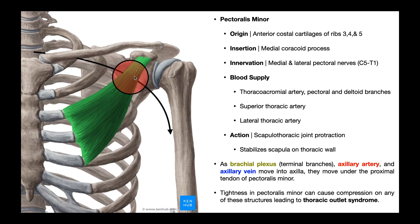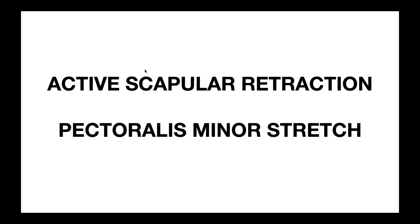So how do you fix that situation? You can perform exercises like active scapular retraction — rows are a good exercise for this because they stretch the pectoralis minor, actively contracting the antagonist to give a little extra stretch. You can also do passive stretches of the pectoralis minor muscle. Hopefully this video gave you a good understanding of the mechanism of thoracic outlet syndrome.